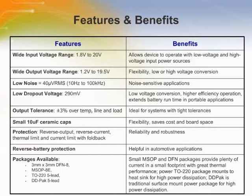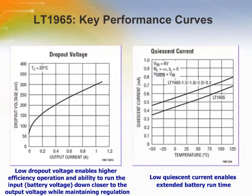The operating junction temperature range is minus 40 to plus 125 degrees C. As shown in the left chart, the device is capable of supplying up to 1.1 amps at a typical dropout voltage of 310 millivolts. The low dropout voltage allows for higher efficiency operation, and battery life in portable products may be increased as the input voltage can run down closer to the output voltage while still maintaining Vout regulation. The right chart illustrates quiescent current versus temperature; at 25 degrees C, operating quiescent current is approximately 500 microamps for the adjustable version and 600 microamps for the fixed version, dropping to less than 1 microamp at shutdown.